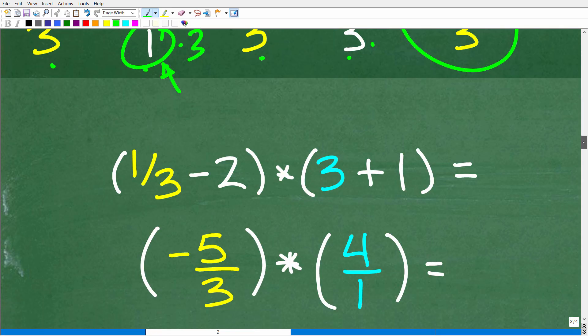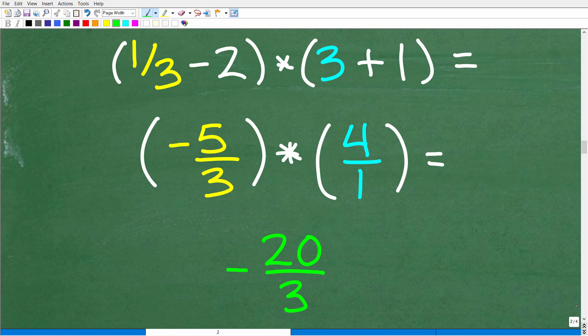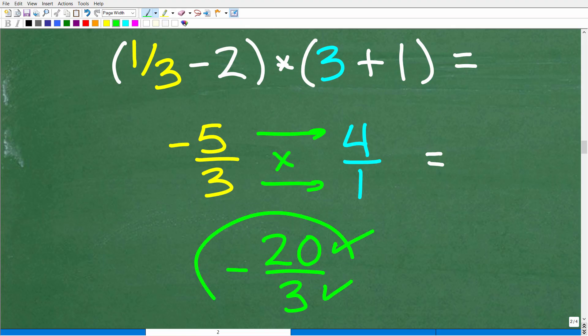Alright, so we're almost there. So what we did is figured out one third minus two, that's equal to negative five thirds times three plus one, which of course is four. But let's express that four as a fraction. We'll have that as four over one, because when we multiply fractions, what we need to do is multiply the respective numerators and denominators. I'm going to show you that here. So we're just going to multiply across. So negative five times four is negative 20 over three times one, which of course is three. So our answer is negative 20 over three.